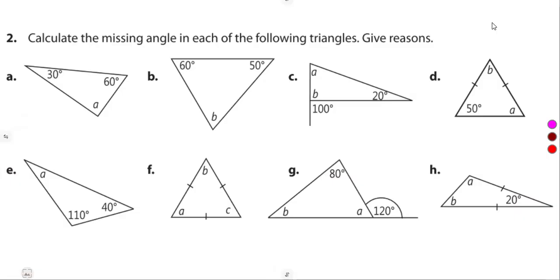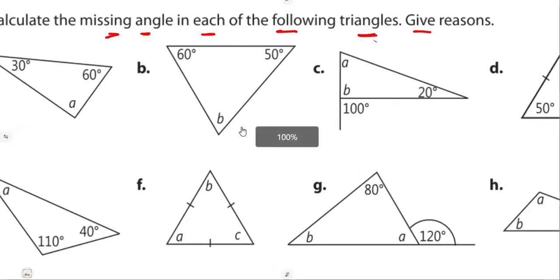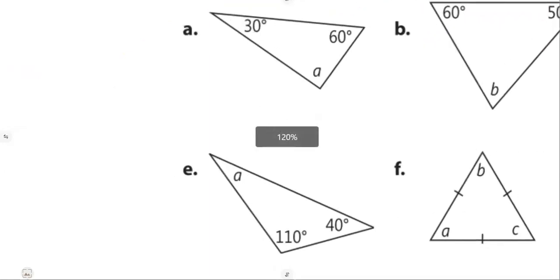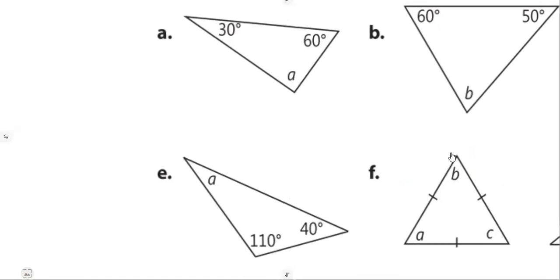We are going to quickly look into the given questions. Question number two was to calculate the missing angle in each of the following triangles. In each triangle you must calculate the missing angle and give reasons for each and every answer. These are basic revision questions that you might be given.